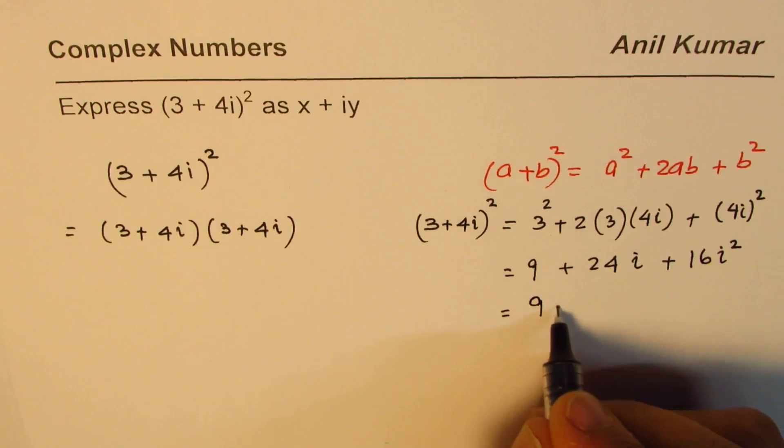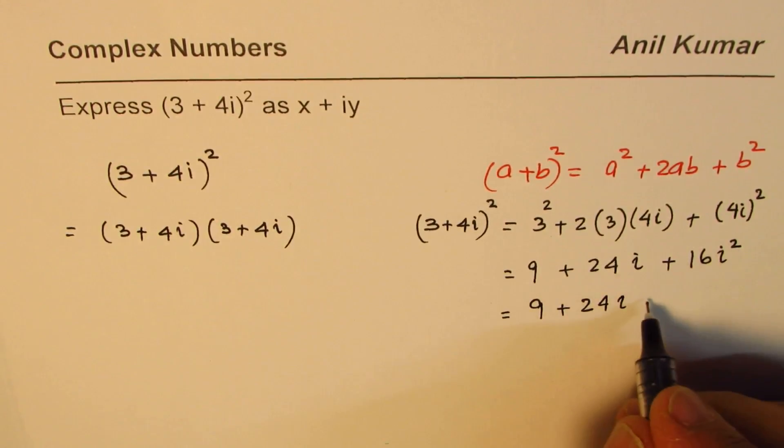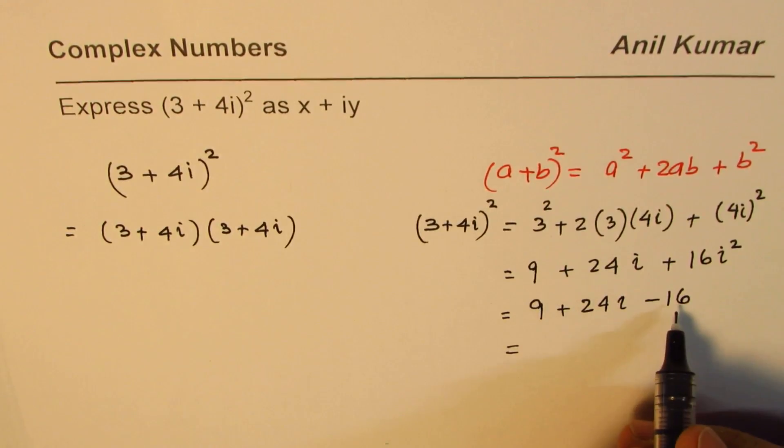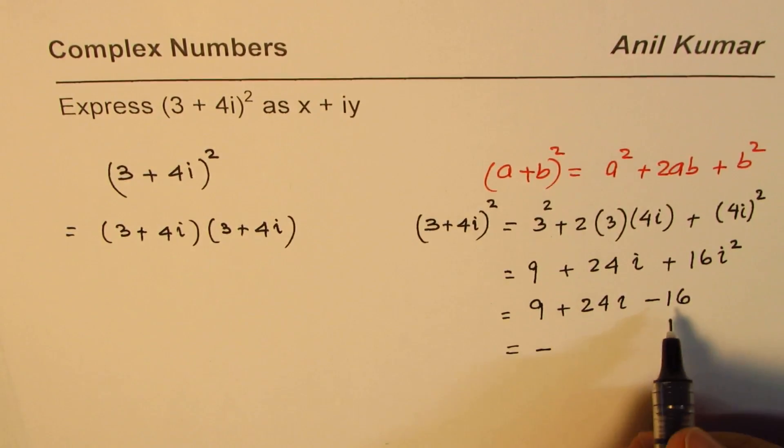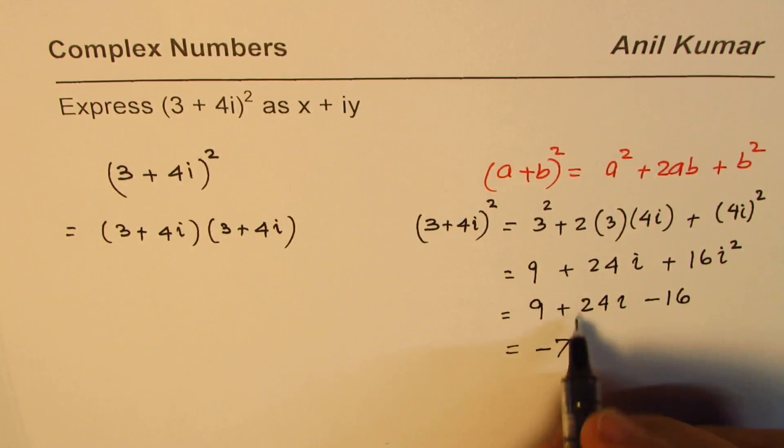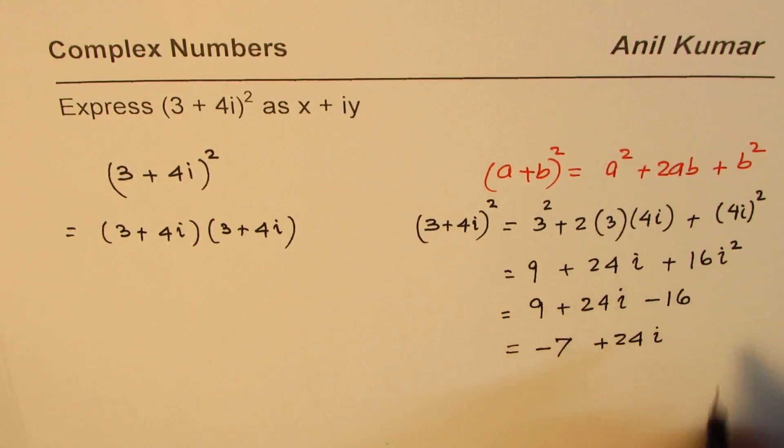So we can write this as 16i square. That is 9 plus 24i. i square is minus 1, so we can write this as minus 16. Then we can combine 9 and minus 16. That gives us minus 7 plus 24i. So that becomes the solution.